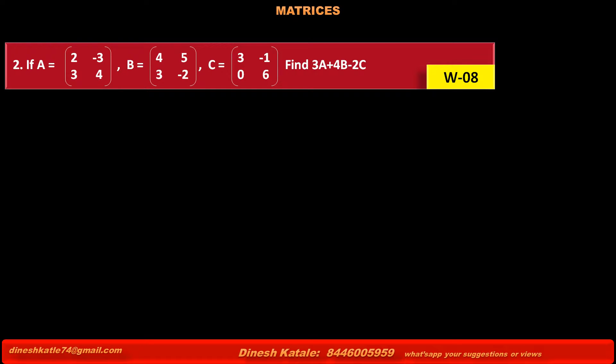Answer: 3A + 4B - 2C is equal to 3 into matrix A [2, -3; 3, 4] plus 4 into matrix B [4, 5; 3, -2] minus 2 into matrix C [3, -1; 0, 6].